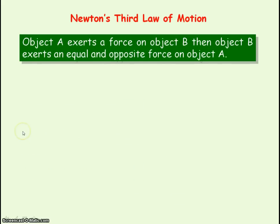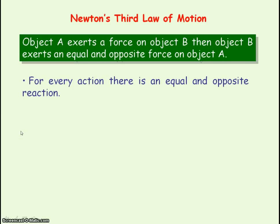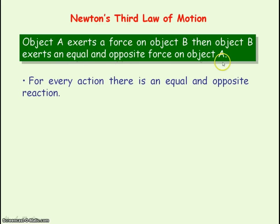Newton's Third Law of Motion states that if object A exerts a force on object B, then object B will exert an equal and opposite force on object A. So for every action, there is an equal and opposite reaction. The action is object A exerting a force on object B, and the reaction force is object B exerting an equal and opposite force on object A.